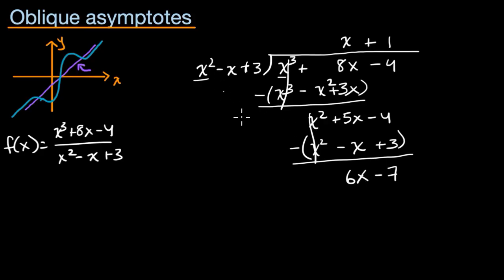And so that's our remainder, because x squared won't go into that more times. And so we can rewrite f of x. We could say that f of x is equal to x plus 1 plus 6x minus 7 over x squared minus x plus 3.